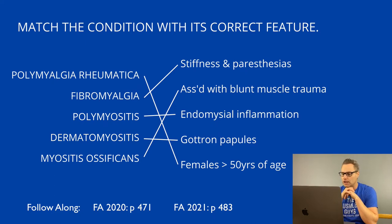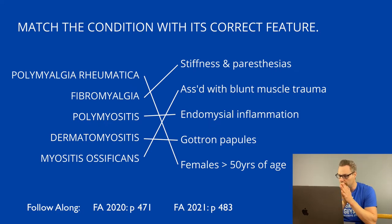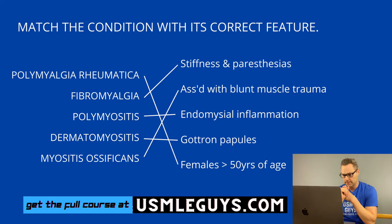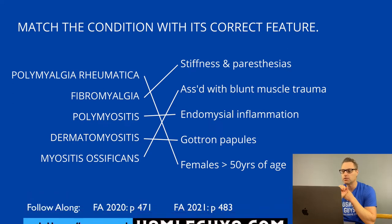Let's start with polymyalgia rheumatica. This condition is characterized by pain and stiffness in proximal muscles, and is often accompanied by fever, malaise, and weight loss. It's important to note that muscle weakness is not associated with this condition. It is most commonly seen in females older than 50 years of age. Labs will show increased ESR and CRP, but creatine kinase will be normal. This typically responds well to low-dose corticosteroids.